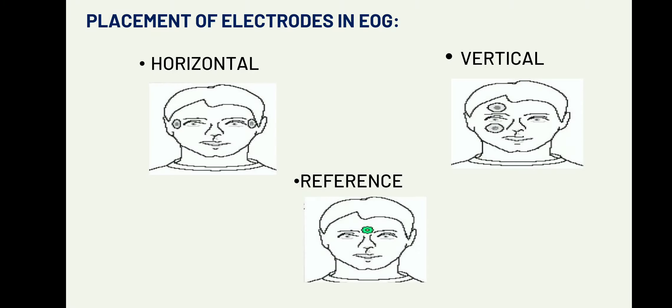These are the placements of electrodes. As the figure shows, left and right electrodes are placed for horizontal measurement, and up and down electrodes for vertical placement. The ground electrode is placed on the forehead.